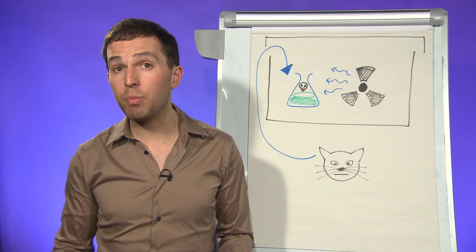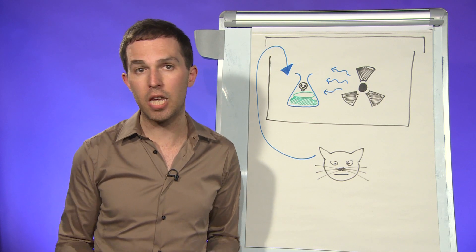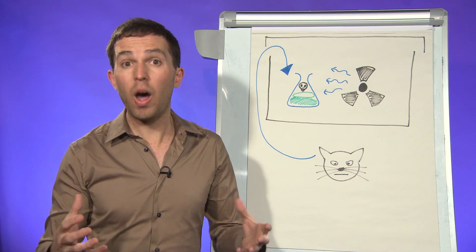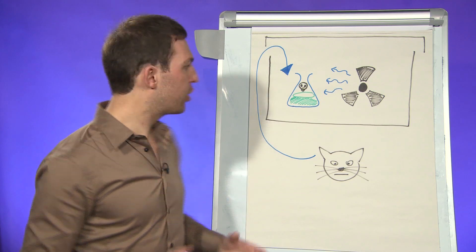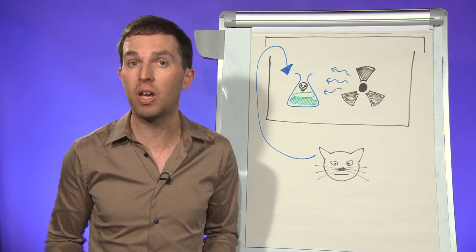Now that sounds absurd, but that's what quantum mechanics says, and it highlights some of the problems with our interpretation of quantum mechanics. I mean, what actually is an observer? Could the cat be considered an observer, or does it have to be a human being? What causes the wave function collapse?